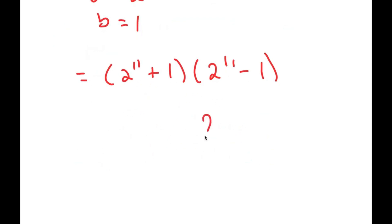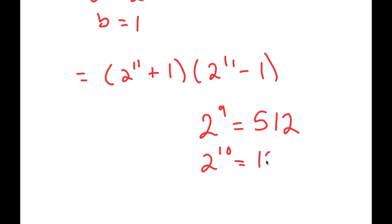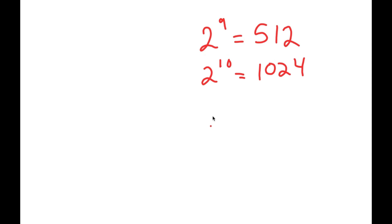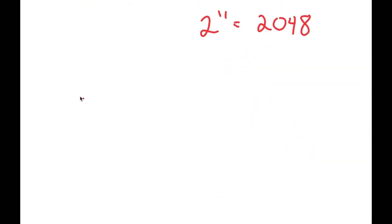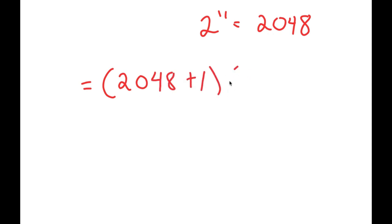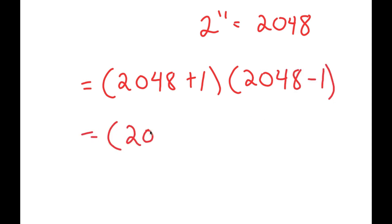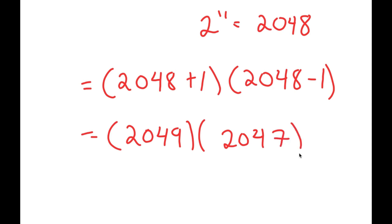Now, what is 2 to the power of 11? Well, 2 to the power of 9 is 512. 2 to the power of 10 is double of 512, which is 1024. So 2 to the power of 11 is double of 1024, which is 2048. So now I get 2048 plus 1, times 2048 minus 1. Now, 2048 plus 1 is 2049 and 2048 minus 1 is 2047. So I get 2049 times 2047.